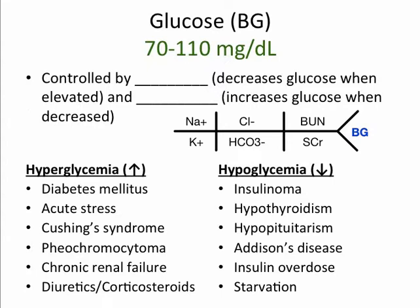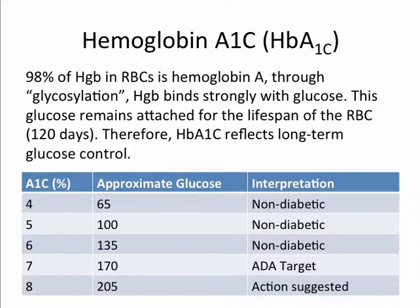The final component of the basic metabolic panel is blood glucose. Blood glucose is controlled by insulin, which decreases glucose whenever it's elevated, and glucagon, which increases glucose when it's decreased. Diabetes mellitus is the most common cause of an elevated blood glucose, but there are a variety of causes that increase or decrease blood glucose. An additional lab associated with diabetes is the hemoglobin A1C. 98% of hemoglobin in red blood cells is hemoglobin A. Through glycosylation, hemoglobin binds strongly with glucose, and this glucose remains attached for the lifespan of the red blood cell — 120 days — so the hemoglobin A1C reflects long-term glucose control.